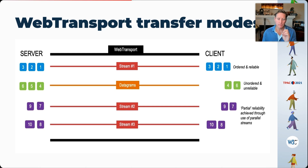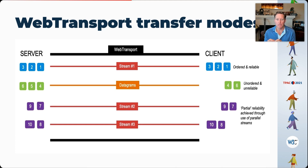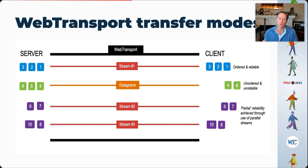The last two examples — streams two and three — show sharding a set of purple objects seven, eight, nine, and ten across two streams. We notice that as the client receives them within stream number two, they arrive in order and are reliable. However, the order is not guaranteed between streams. We refer to this mode as partial reliability, and it turns out to be very useful for sending video frames, because it avoids head-of-line blocking within any one particular stream.